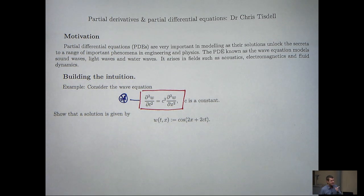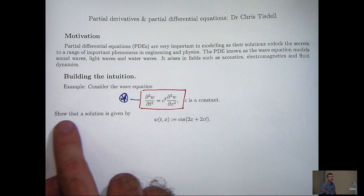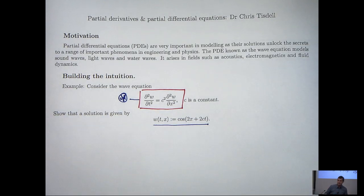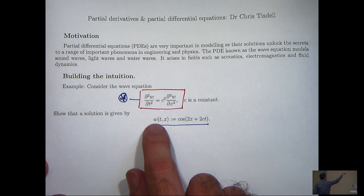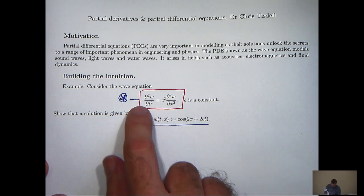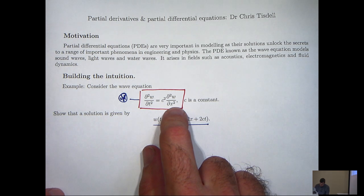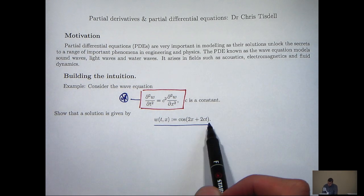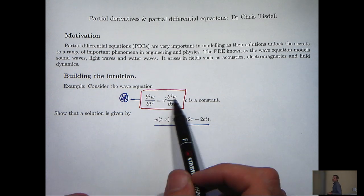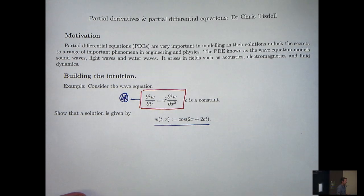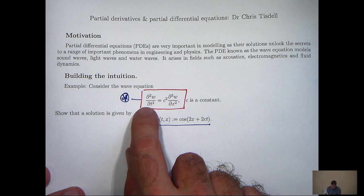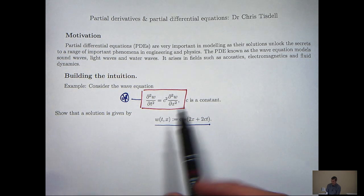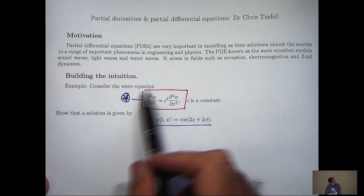Let's have a look at the following example. Consider the wave equation and show that a solution to the wave equation is given by this function here. What we mean when we say solution to a PDE, we mean that the specific partial derivatives of this function satisfy the wave equation. So basically, what we're going to do is calculate the partial derivatives of this function that appear in the equation and show that the equation balances. We're given a particular function and asked to show that it is really a solution to this problem.